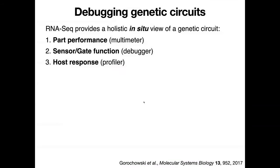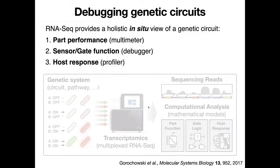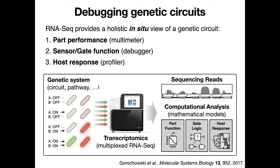To address this, over the past five or six years we've been attempting to build what I call a genetic debugger that uses RNA sequencing to provide a more complete view of the entire transcriptional state of the circuit. This works by carefully processing and interpreting RNA sequencing data to allow us to measure how each of the individual genetic parts and devices is functioning, as well as the response of the cell to the circuit.